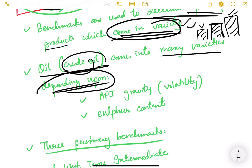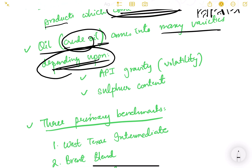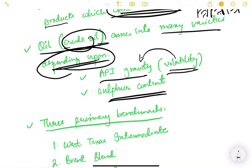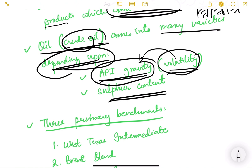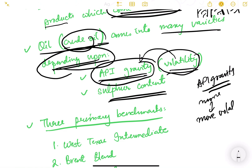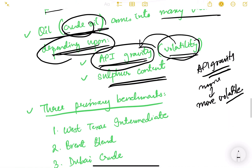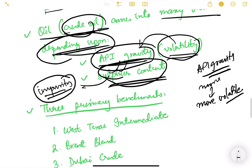Volatility is measured by API gravity — a laboratory test. Higher API gravity means more volatile and higher grade oil. Sulfur content is an impurity in oil; higher sulfur content means lower purity. The three primary global oil benchmarks are: West Texas Intermediate (WTI), Brent Blend, and Dubai Crude.